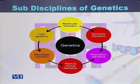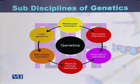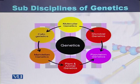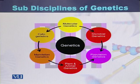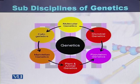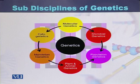Molecular genetics deals with genetics at the molecular level. Cytogenetics is where we study chromosomes and the banding pattern of the chromosomes. Mendelian genetics covers all the laws that were developed by Gregor Mendel — the laws of heredity. Plant and animal genetics refers to studying the genetics of plants or animals.